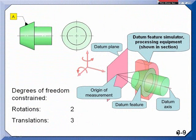Where a cone is used as a primary datum feature on a regardless of material boundary basis, it can constrain five of the six degrees of freedom. Once you grab a cone with a theoretical datum feature simulator, the only thing it can do is rotate.